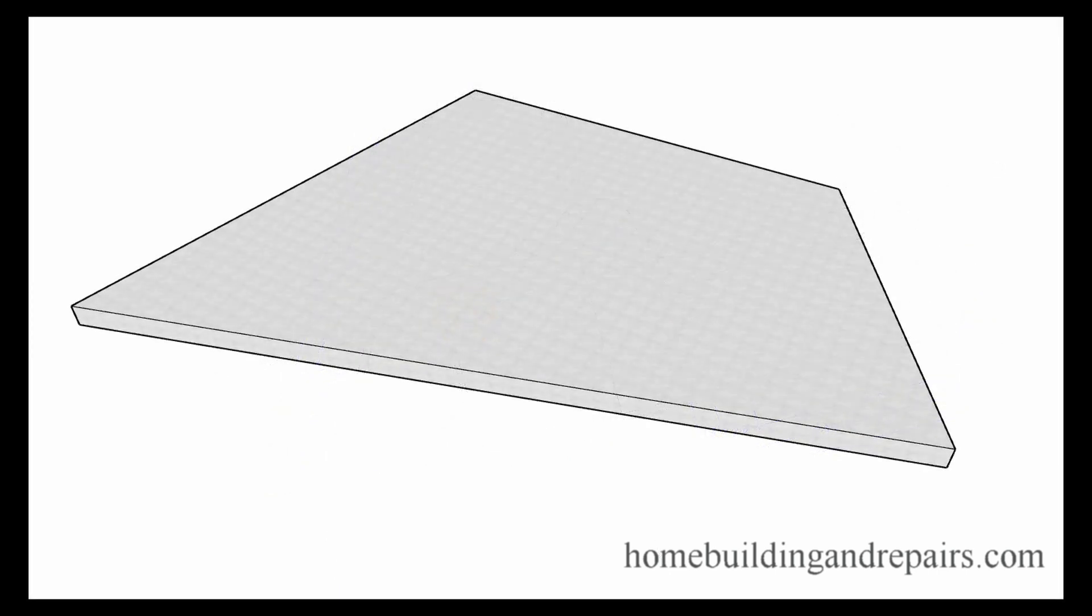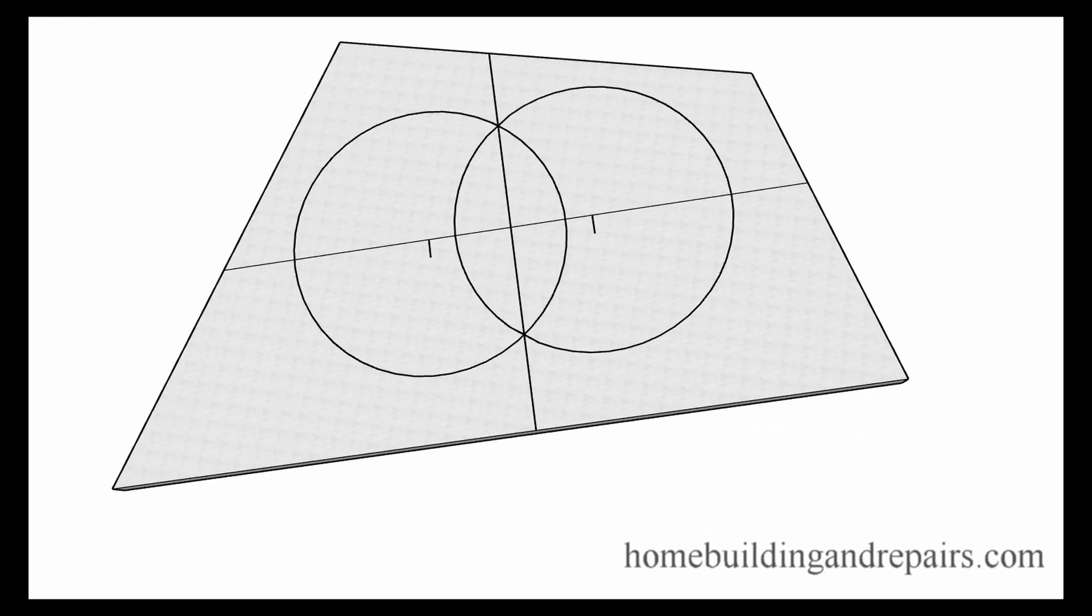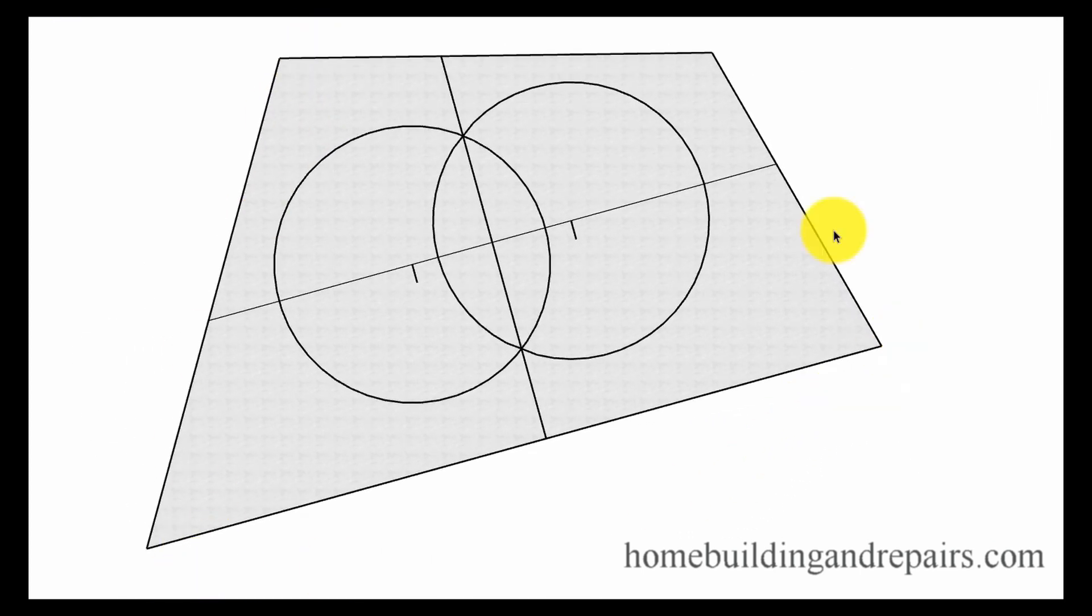So the first thing we are going to do will be to start with the building foundation. Let's just pretend like it's already been poured and we want to make sure our walls are going to be 90 degrees to this one here. So all of the walls that run this way are going to be parallel to this line. All of the walls that run this way are going to be perpendicular to this line or at 90 degrees.